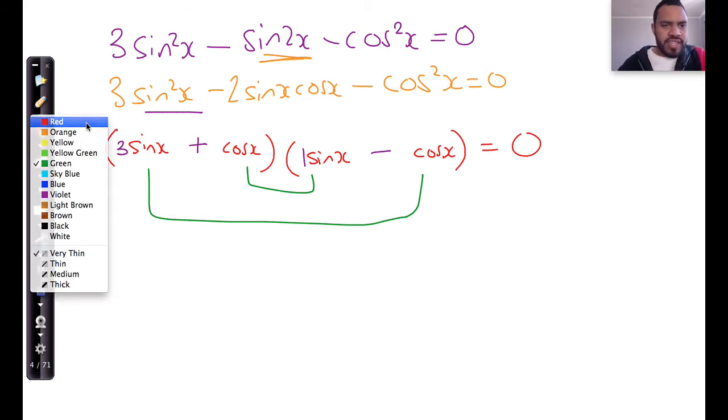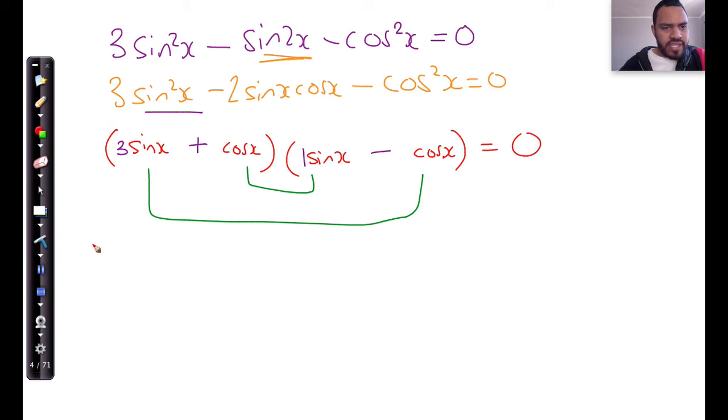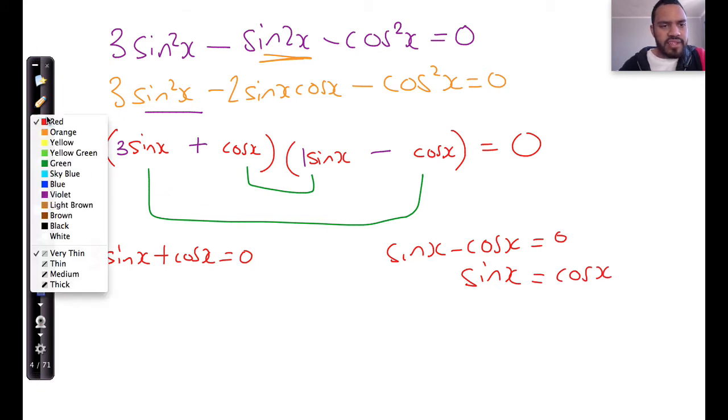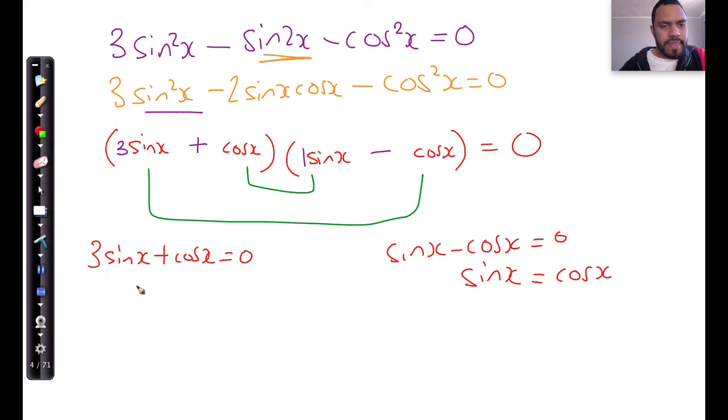Okay, from there you can solve further and you can say this has to be 3 sine x plus cos x equals zero, and this side over here sine x minus cos x equals zero, that's going to give you sine x equals cos x. And on this side it's going to give us 3 sine x equals minus cos x.